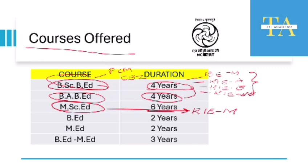These RIEs cover specific states. For example, RIE Mysore covers the South Indian states: Karnataka, Telangana, Andhra Pradesh, Tamil Nadu, Kerala, Puducherry, and Lakshadweep. Similarly, other RIEs have their specific states.